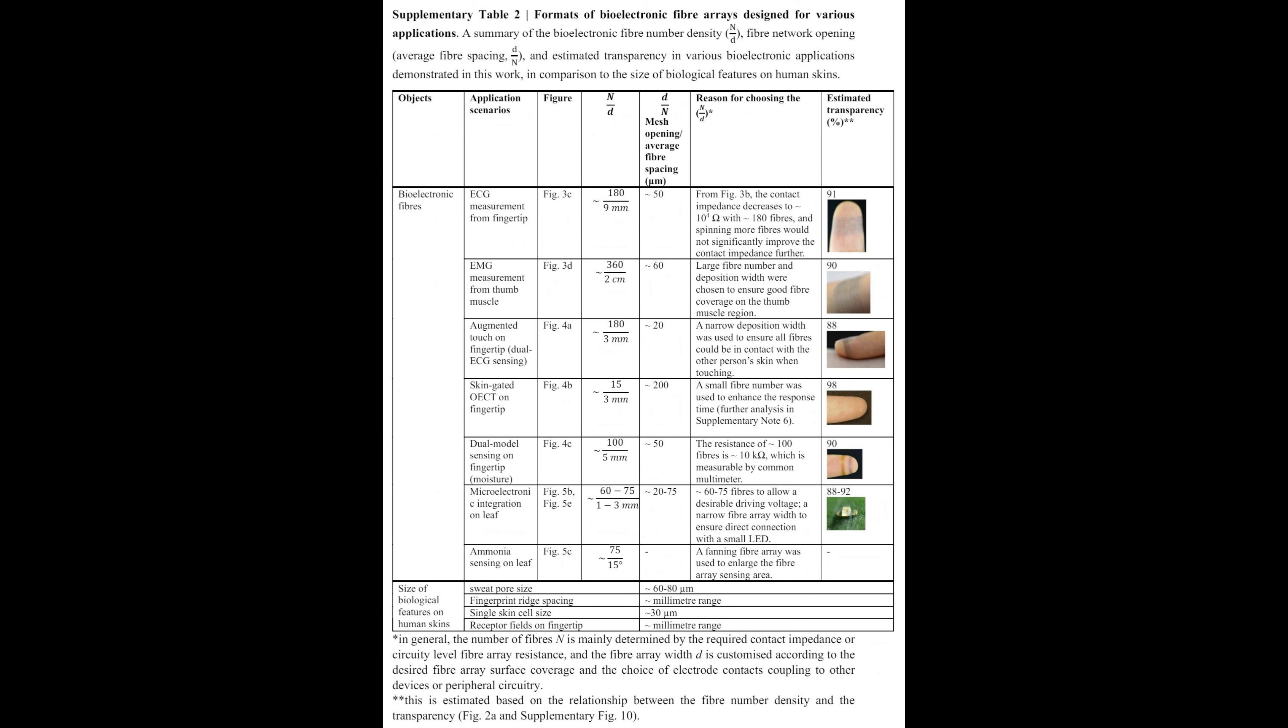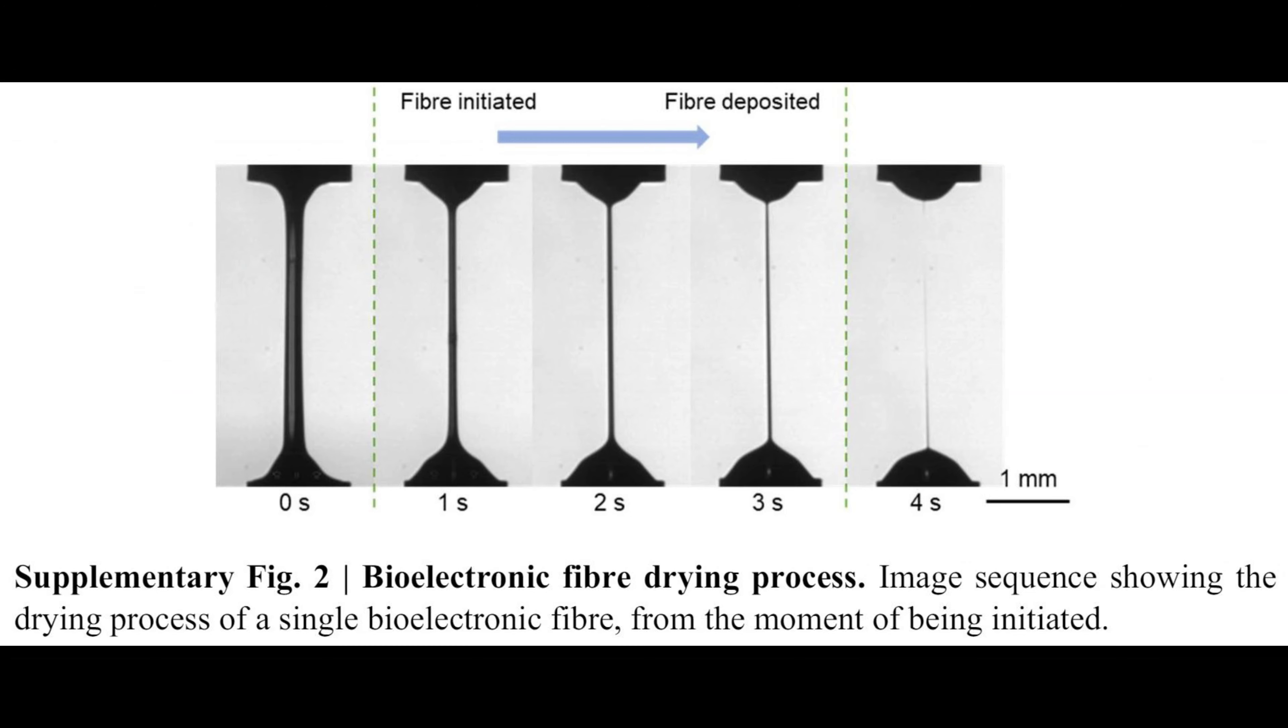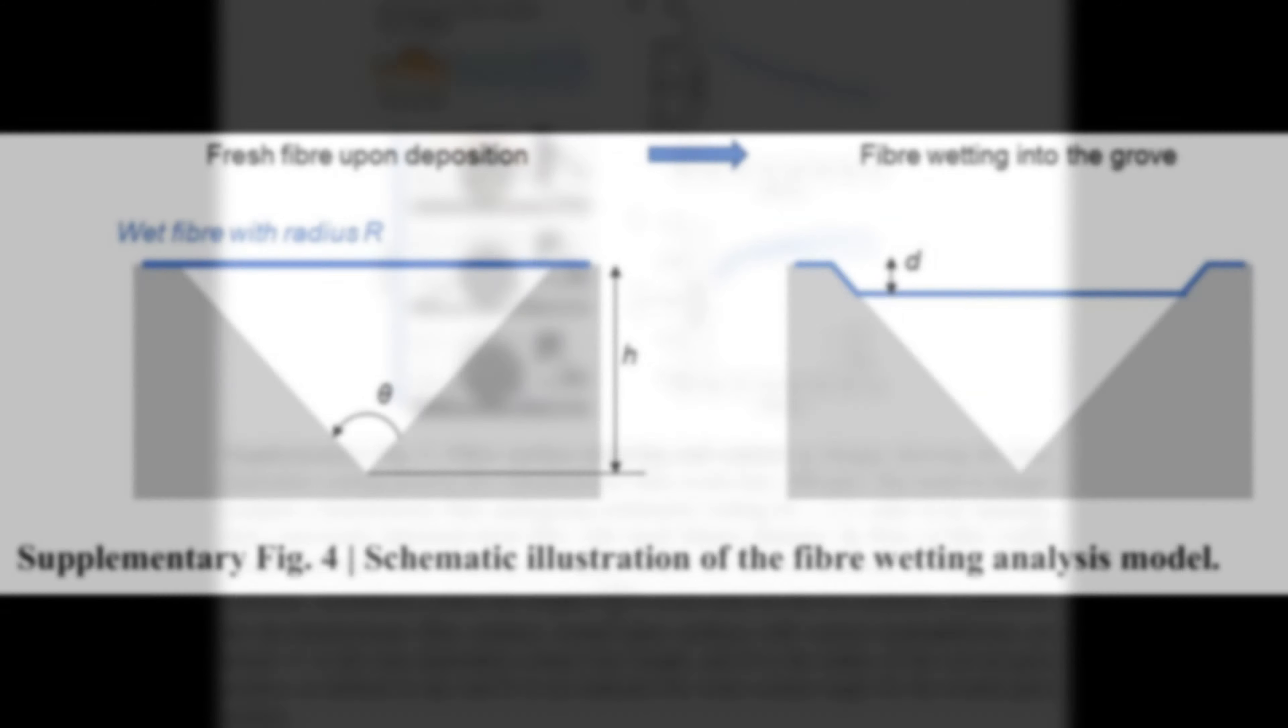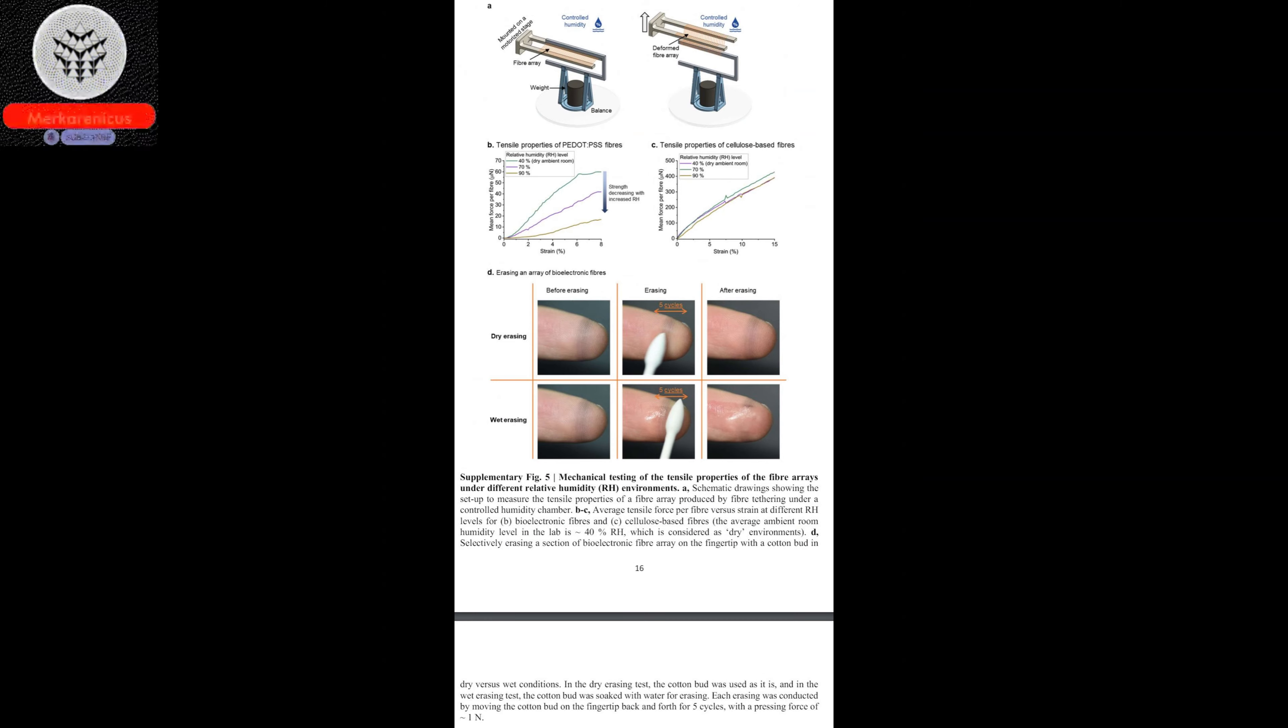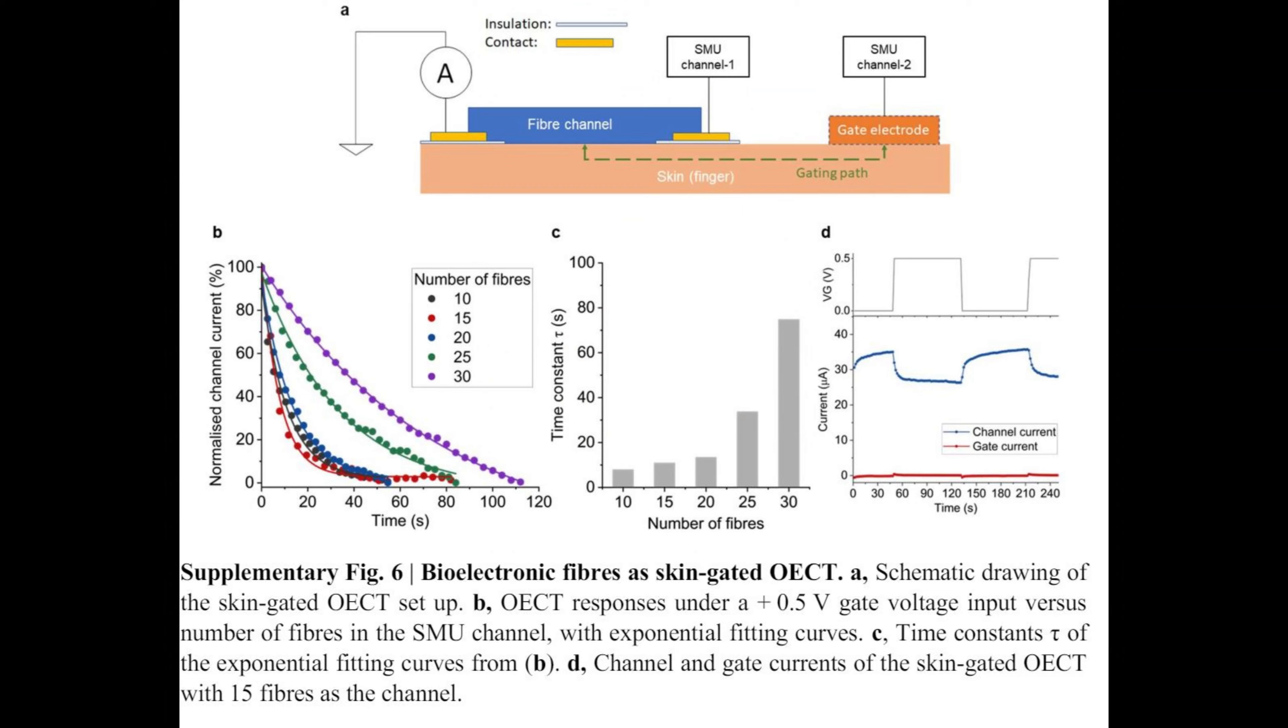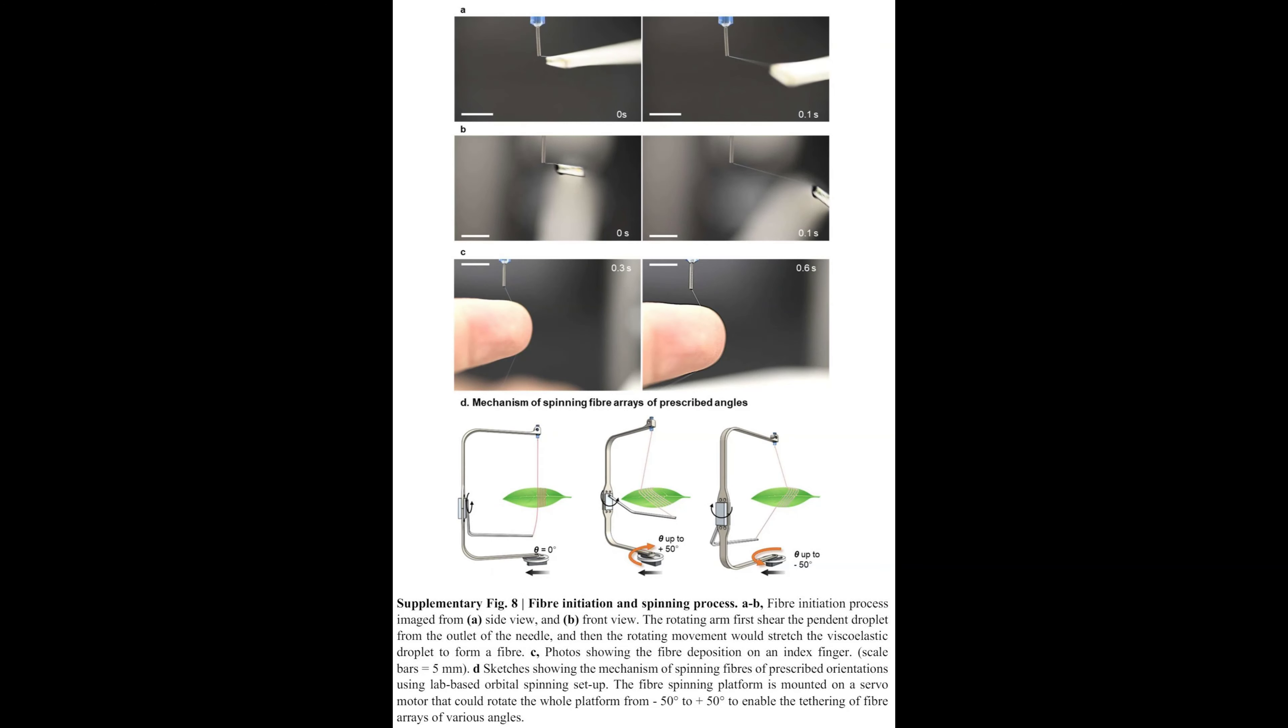The bioelectronic fibres, possessing the valuable attribute of repairability, can be effortlessly eliminated once they have fulfilled their purpose, resulting in an insignificant waste generation of less than one milligram. In contrast, a conventional load of laundry generates a substantial 600 to 1500 milligrams of fibre waste. According to Wang, our straightforward method of fabrication allows for the placement of sensors in virtually any location and their subsequent repair at the precise time and place they require it. This eliminates the necessity for large printing machines or centralised manufacturing facilities.